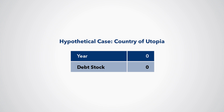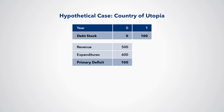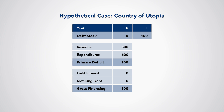In year zero, the country of Ethiopia has never borrowed and has a debt stock of zero. However, it expects that during the year, expenditure will exceed revenue by 100 Ethiopian dollars. It therefore borrows $100 for five years at an interest rate of 5%. In year one, its debt stock is now 100. The flow of debt between year zero and one was 100, as it issued that amount of new debt.